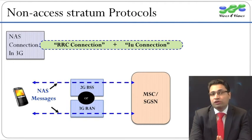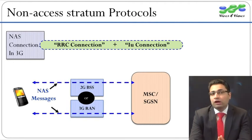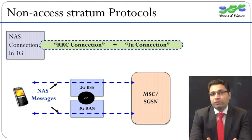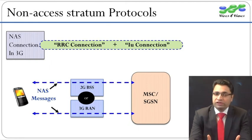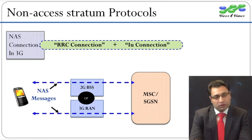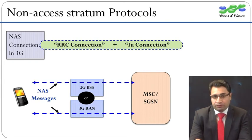These access networks could have been from 2G as well. Even then, the structure of the NAS message remains the same. For example, a location updating request message or a paging request message does not change its structure depending on the underlying access network.